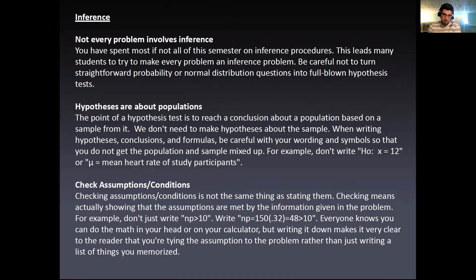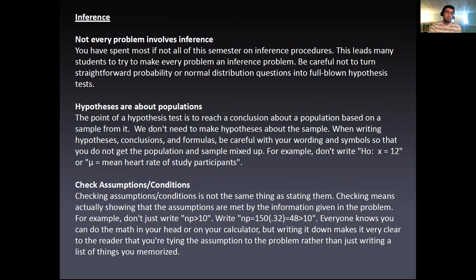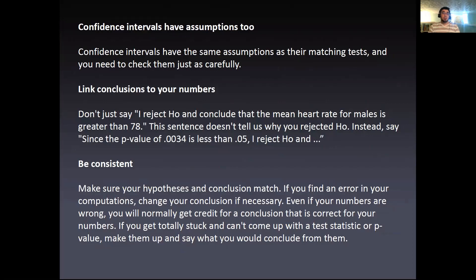Make sure you check your assumptions or conditions — it's not the same thing as just stating them. Checking means actually showing that the assumptions are met by the information given in the problem. For example, don't just write 'n times p is greater than 10.' Write 'n times p equals 150 times 0.32, which is 48, which is greater than 10.' Writing it down makes it clear to the reader that you're tying the assumption to the problem rather than just writing a list of things you memorized. Confidence intervals also have assumptions — the same assumptions as their matching tests — and you need to check them just as carefully.